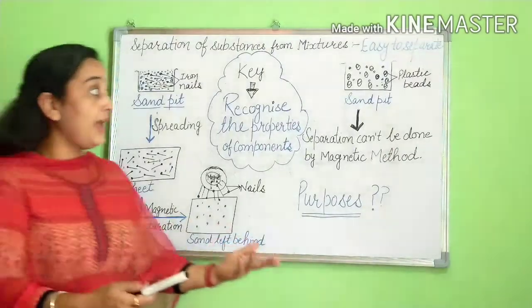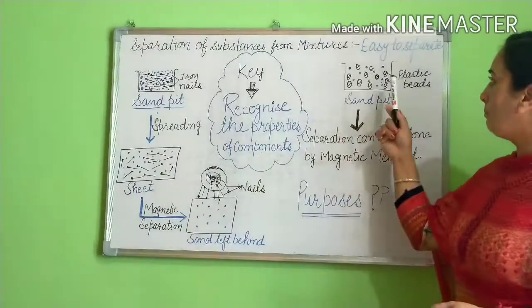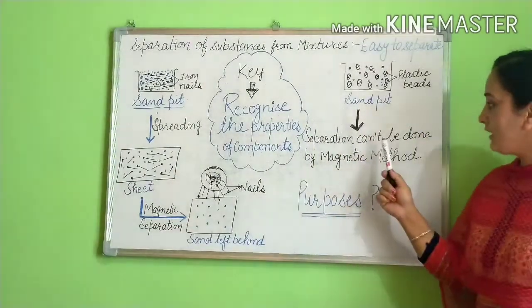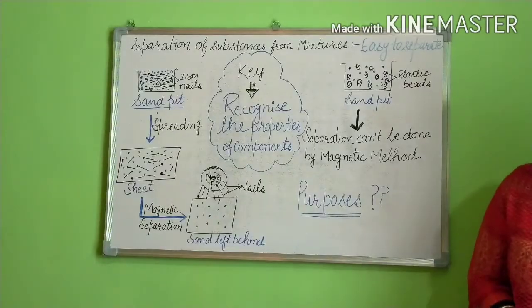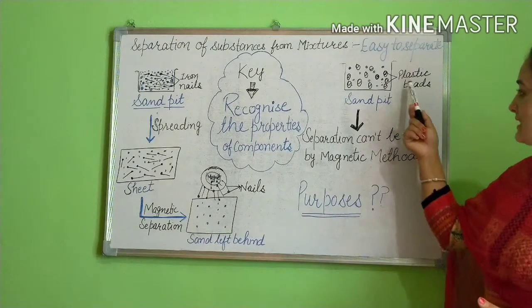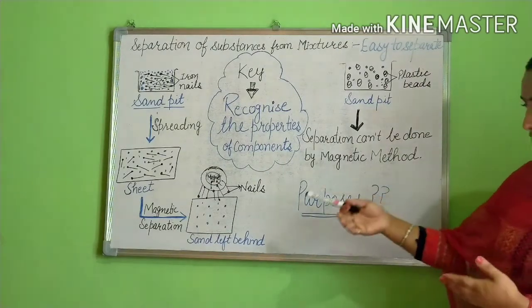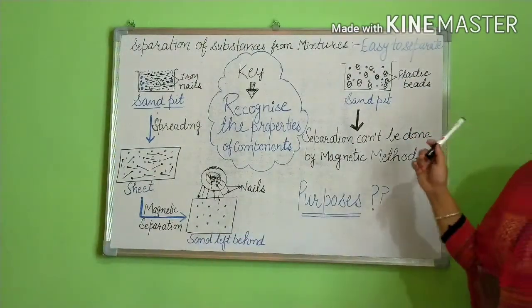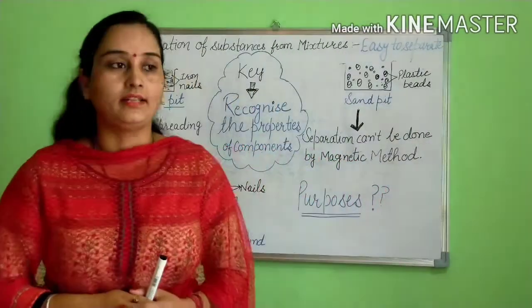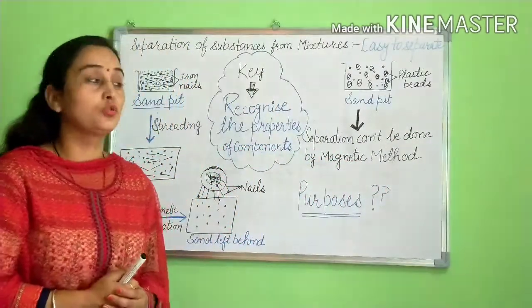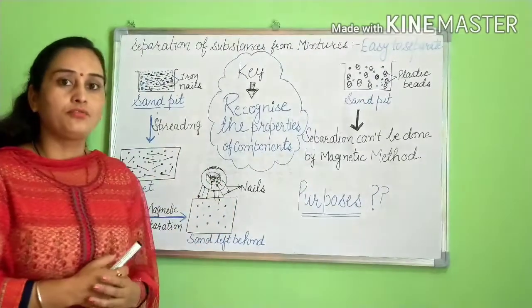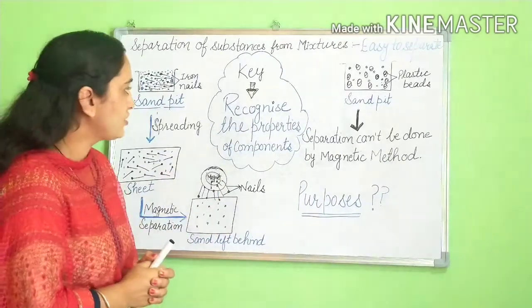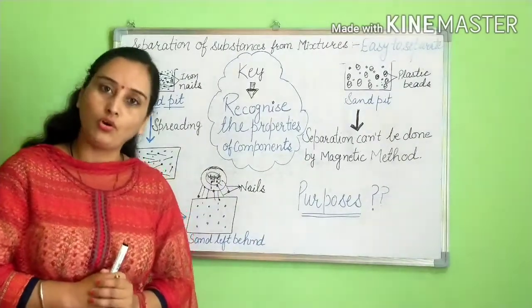What would happen if instead of iron nails, plastic beads had been sunk into the sand pit? Then separation cannot be done by the magnetic method, because plastic beads have different properties — they are not magnetic. So the key to separating substances from a mixture is to recognize the properties of the components.